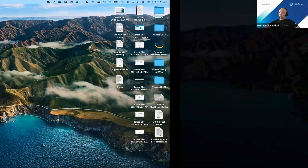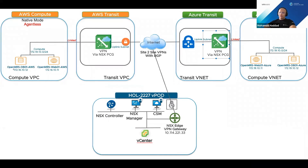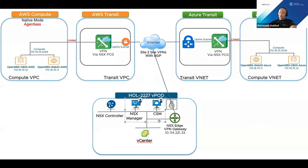Hello everyone, my name is Mohammed Haddad, a VCN solution engineer. Before jumping into the lab I'd like to show the topology for the hybrid app. In module 3 we have a native cloud application with web and DB living in AWS and the same instances running in Azure. The beauty of NSX Cloud is you can have multiple clouds, multiple accounts, all managed from a single pane of glass — NSX Manager. The policy matches criteria across two clouds using tags, so even if you move VMs or change IP addresses, as long as they keep the same tags, you don't have to worry.